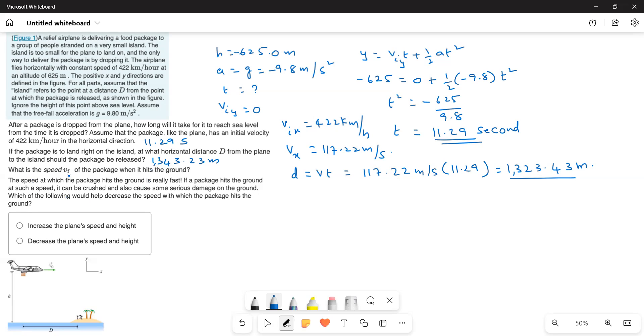And then we have to find out the speed with which the package hits the ground. So, for that we have to find out the y direction velocity. So, v_fy is equal to v_iy plus a t. And then initial velocity is 0 and then plus 9.8 times t is equal to 11.29.